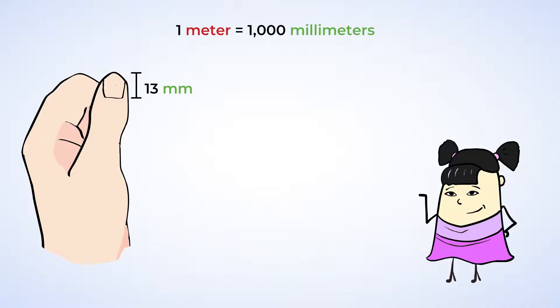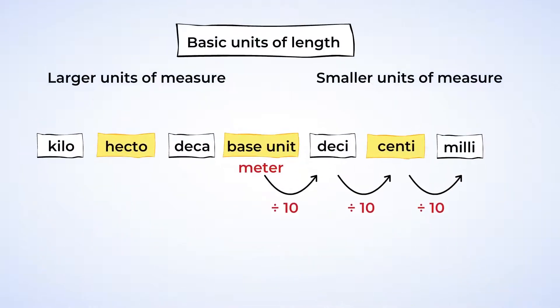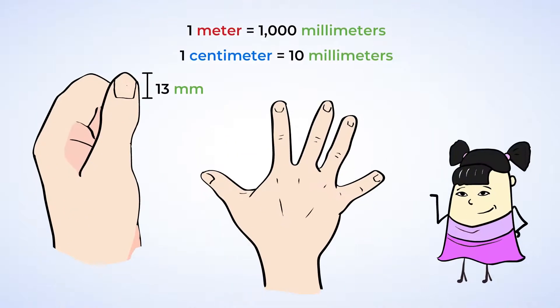Now let's say you wanted to measure something a little longer, like the length of your finger. Now there's a better option than millimeters. And we're going to use the prefix centi and measure it in centimeters. Remember how we said that each prefix is separated by a factor of 10? Well, that means 1 centimeter is 10 millimeters. An adult finger is about 11 centimeters long, just in case you were wondering.